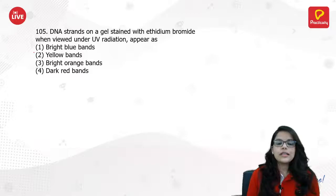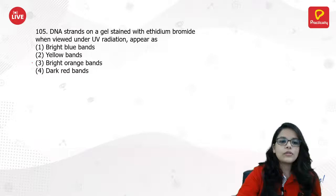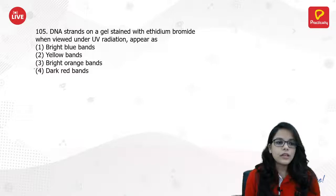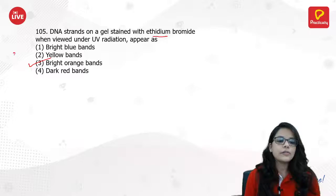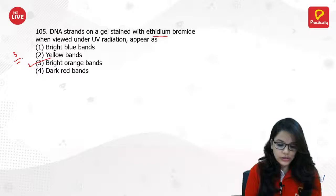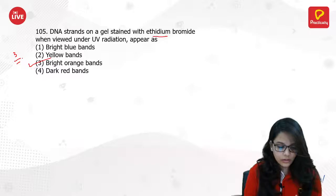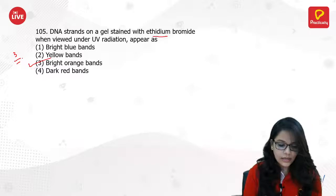DNA strands on a gel stained with ethidium bromide (EtBr), when viewed under UV radiation, appear as bright orange bands. When you see it in a UV chamber, it comes up as bright orange bands, which is given by the chemical ethidium bromide. If you have any questions or doubts, you can come and ask me in the chat box and I will try to help you out.